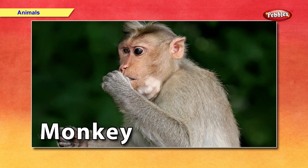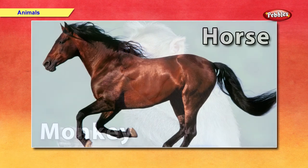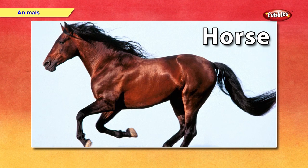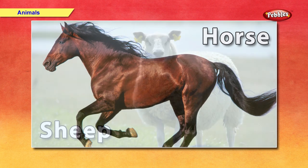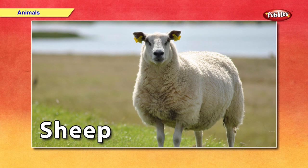Monkey — monkey eats fruits and leaves. They live with their family on trees. Some monkeys are very naughty. Horse — a horse can run very fast. In old days, horse was the only mode of transportation. Sheep — we get meat and wool from the sheep.